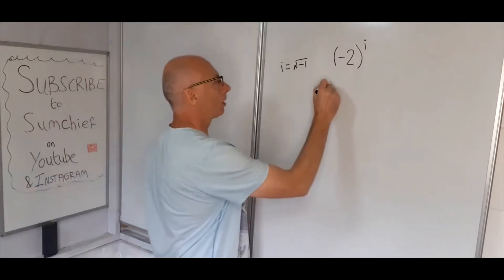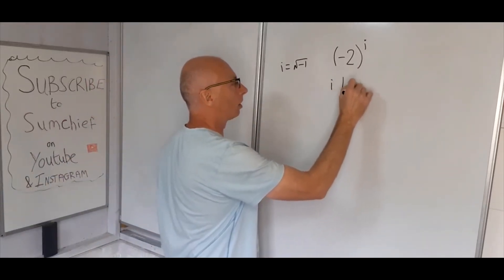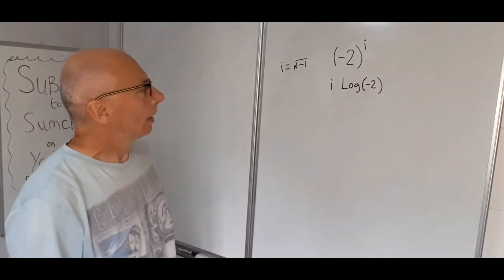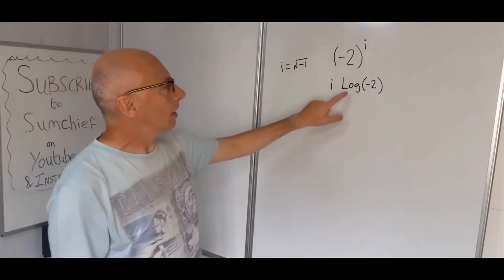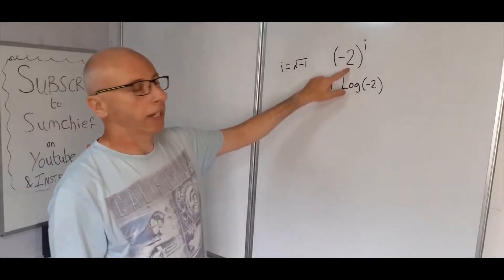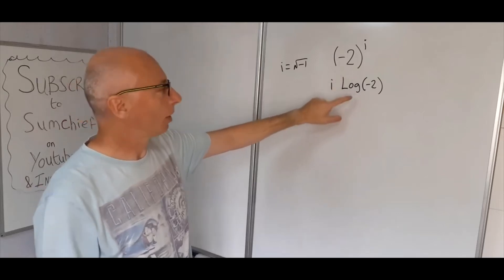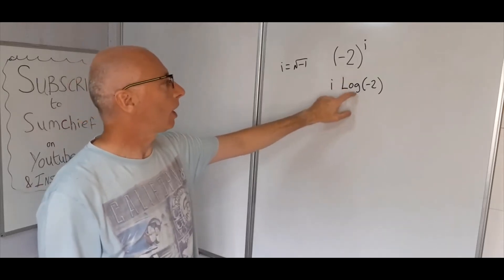So if we do that, we get i log minus two. Now we've just taken the log of it, we've changed the value of this. This is not the same value as this, or if it is, it's by chance, but if you check it, it won't be the same. So i log of minus two.